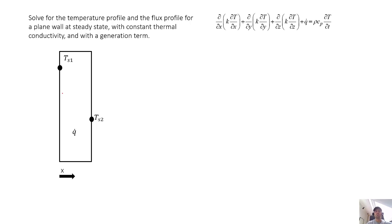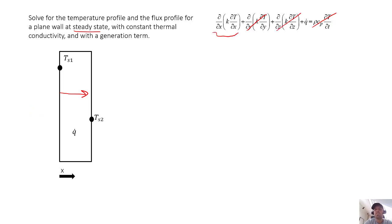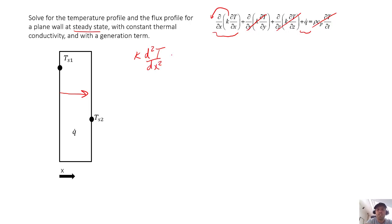Let's start by looking at the heat equation. The system is at steady state so there's no accumulation term. Because this is a plane wall, we expect temperature to vary only in the x direction, not in the y or z direction. So the derivatives with respect to y and z are zero, leaving us with temperature variation in x and the generation term. With constant thermal conductivity we can pull k out, and we get normal derivatives instead of partial derivatives. Our heat equation becomes: k times the second derivative of T with respect to x plus q-dot equals zero.